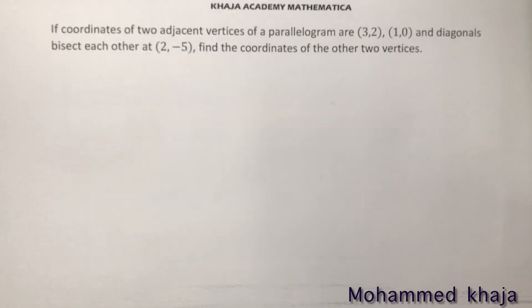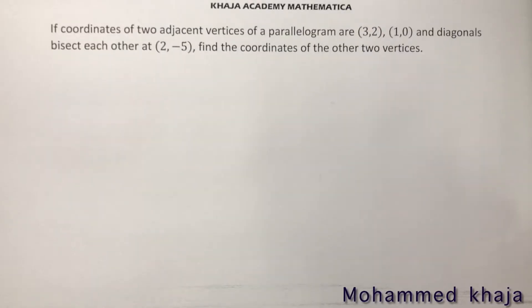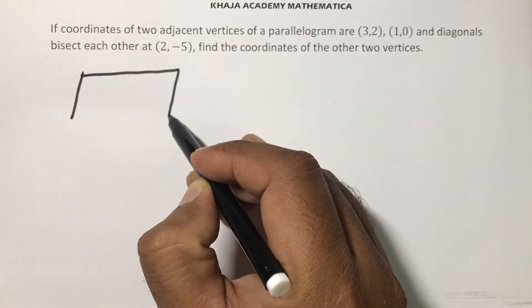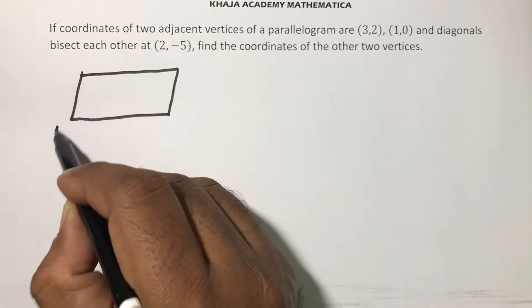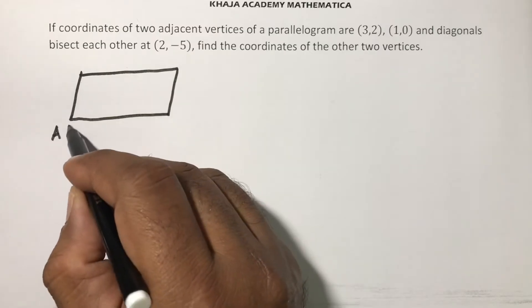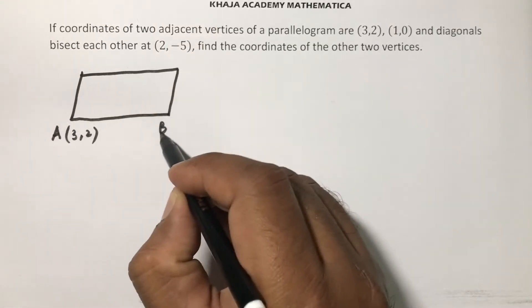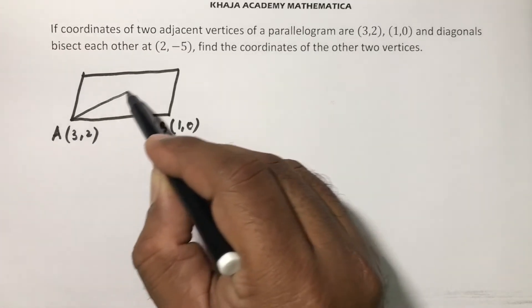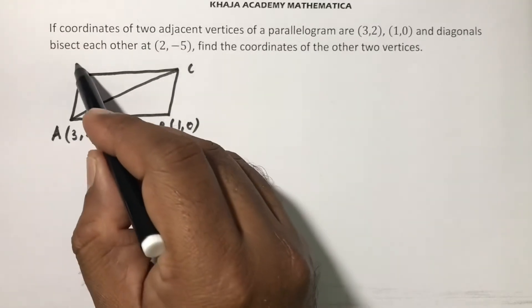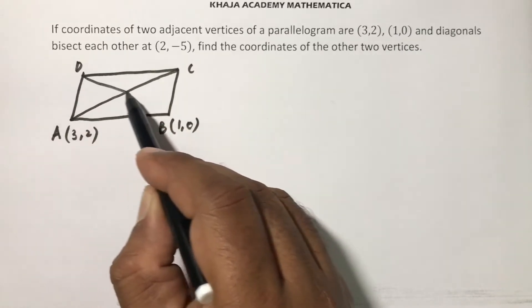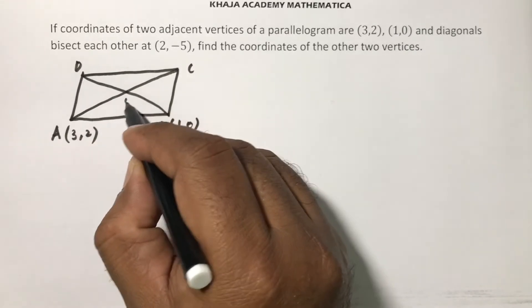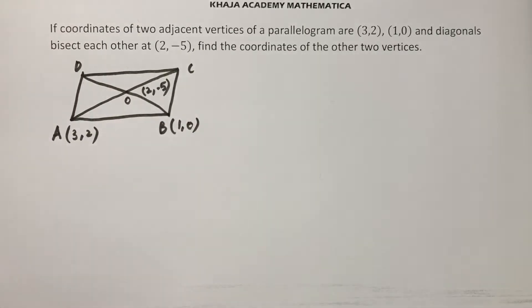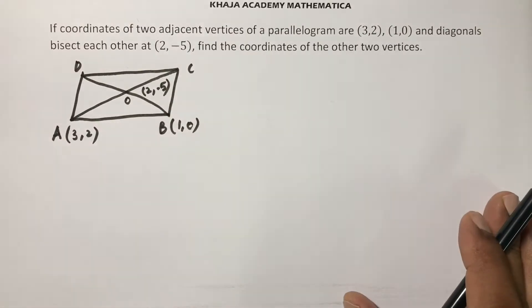If coordinates of two adjacent vertices of a parallelogram are (3,2), (1,0), so in a parallelogram the adjacent vertices, I will take A, and the diagonals bisect each other. So parallelogram A, B, C, D, diagonals bisect each other at O. Find the coordinates of the other two vertices.